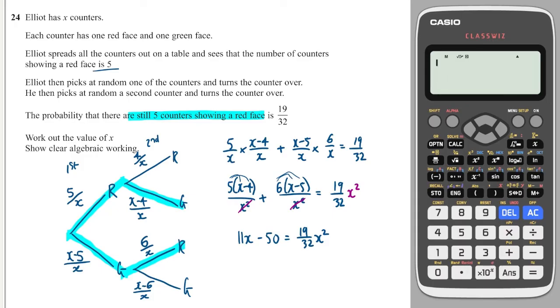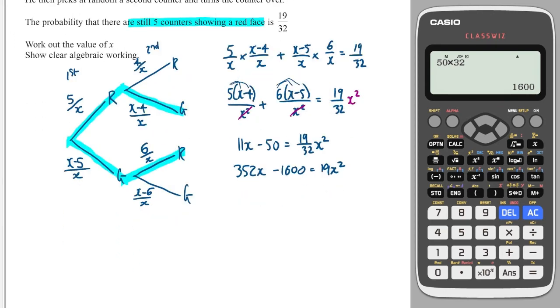Next, I can multiply each term by 32. So 11 times 32 is 352, so it's 352X. 50 times 32 is 1600, so minus 1600. And that's equal to 19X squared. We can move everything over to the right side to get 19X squared minus 352X plus 1600 equals 0.